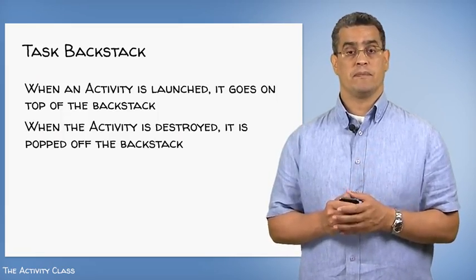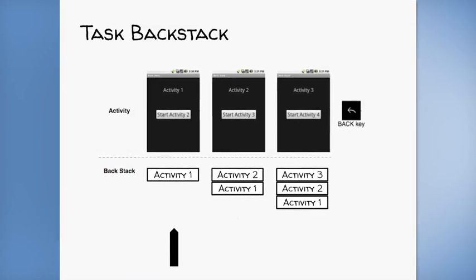This graphic represents an activity running on a device and depicts the state of the task backstack while the application is running. The black pointer at the bottom indicates the current snapshot. When this application is first launched, it starts up Activity 1, which is pushed onto the top of the task backstack as the root of the current task. Activity 1 has a single button labeled 'Start Activity 2.' If the user presses this button, Activity 2 will start. At this point, Activity 1 is suspended and its state will be captured so it can be restored later. Next, Activity 2 begins and is pushed onto the task backstack.